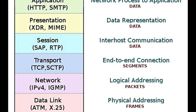Data link layer: One of its main functions includes providing reliable transit of data through a physical network. It decides the physical configuration of various devices and is responsible for synchronization of various physical devices that will transmit the data. It makes sure that the frames are transferred in correct order, and asks for retransmission in case of error. Basically, it provides reliable transmission services to the network layer.